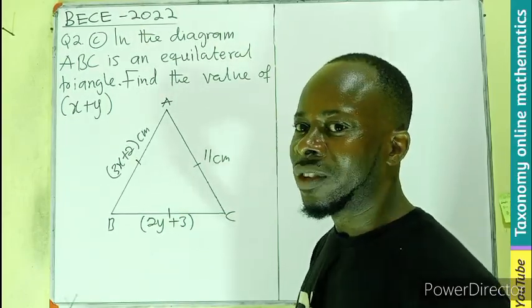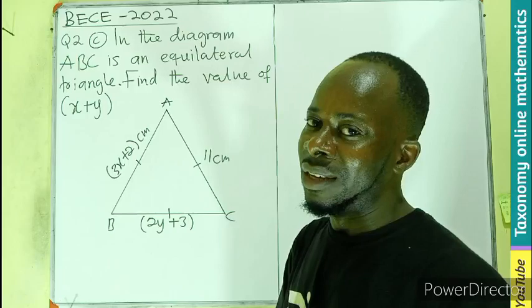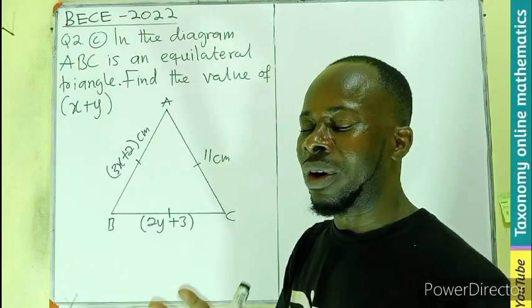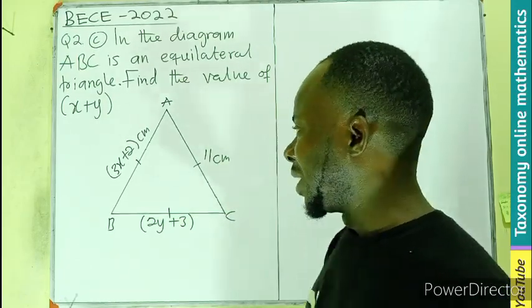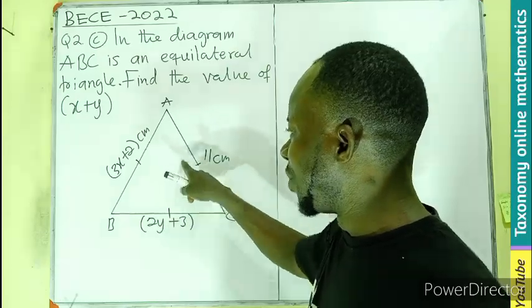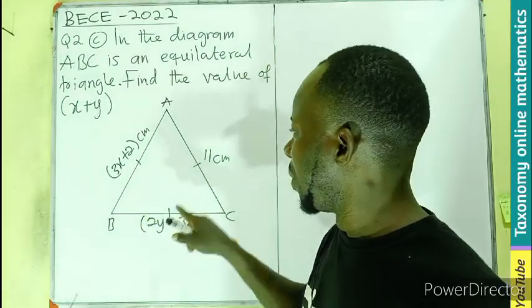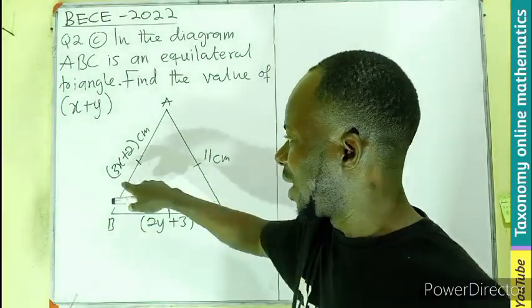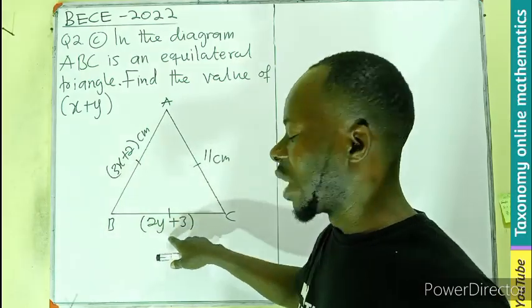Now first off we have to know what an equilateral triangle is. It is a triangle that has all the sides equal. And if you see the mark that has been indicated, meaning all the sides are equal. Meaning the 11 we are seeing here should have been here also, should have been here.